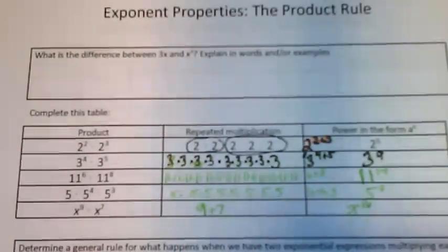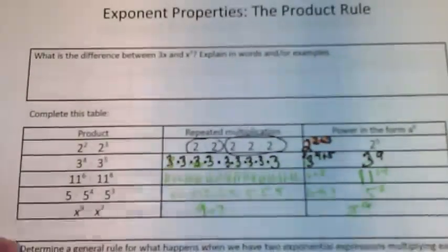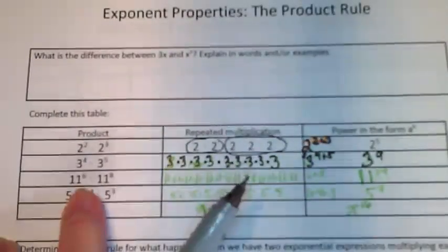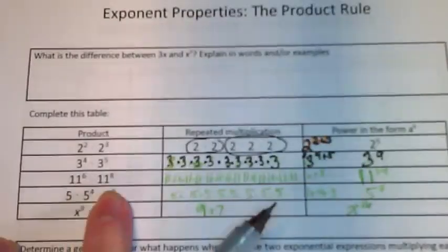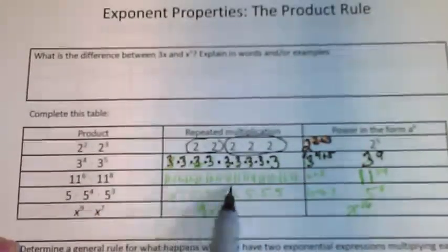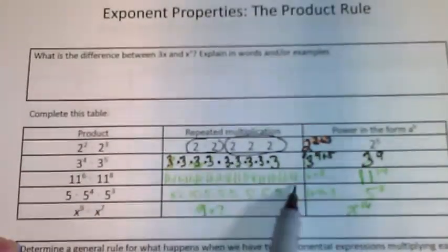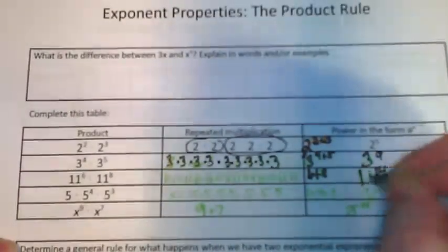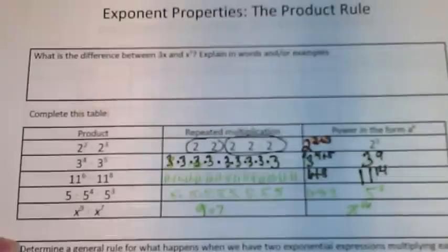Okay, I barely squeezed all the 11's in there. I'm not going to rewrite them, but I have 11 to the sixth times 11 to the eighth, so I wrote 6 elevens and then I wrote 8 more elevens. I'm doing a shortcut: 6 plus 8 is 14, so the exponent is 14. The base stays 11. Hopefully you're starting to see a pattern here.